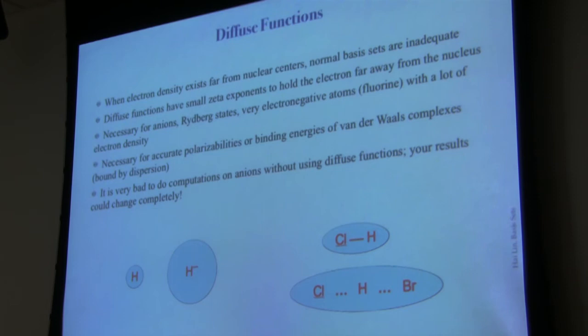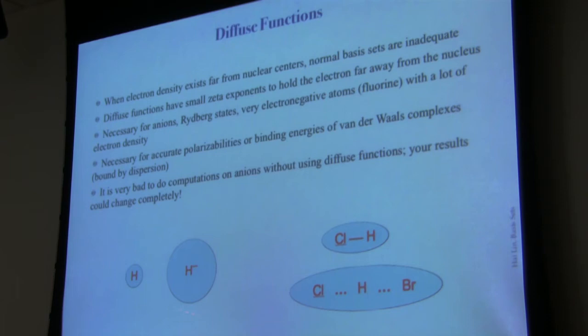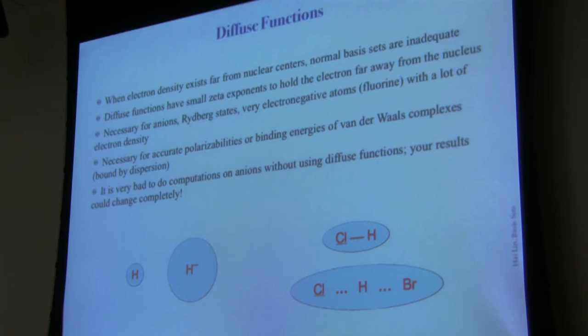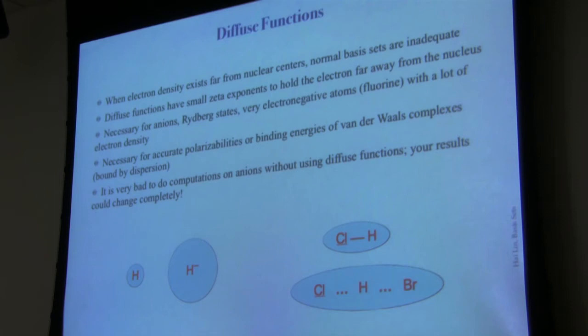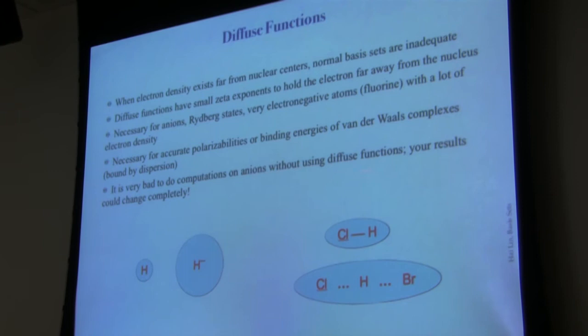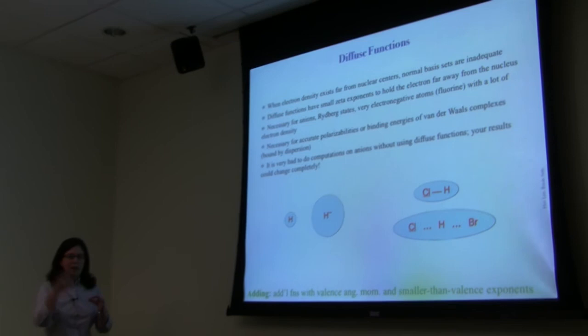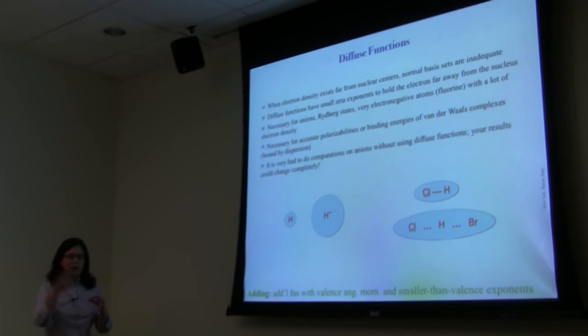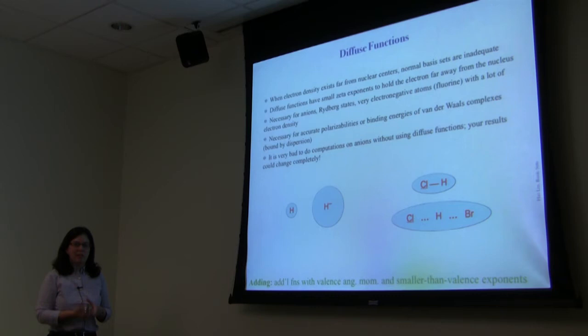Diffuse functions are necessary for anions, Rydberg states, electronegative atoms like fluorine, and van der Waals complexes where monomers are far apart. This is one way your calculation can go very wrong: if you actually need diffuse functions and don't have them, you can get qualitatively incorrect answers. In this step we're adding functions with valence angular momentum but with smaller-than-valence exponents.